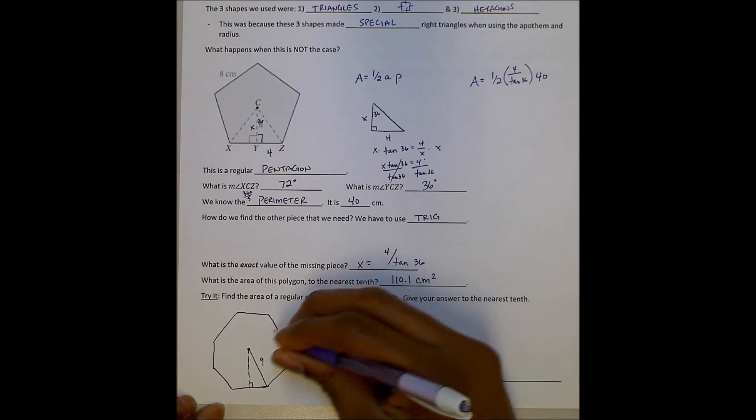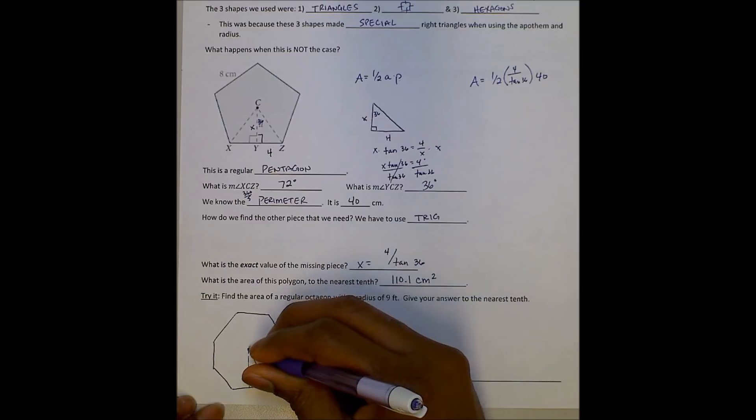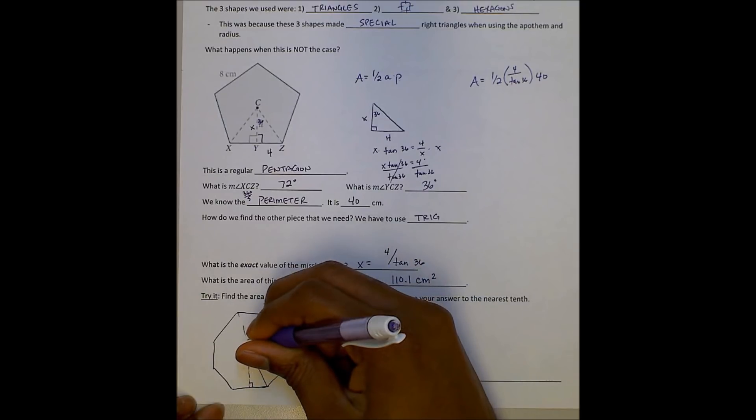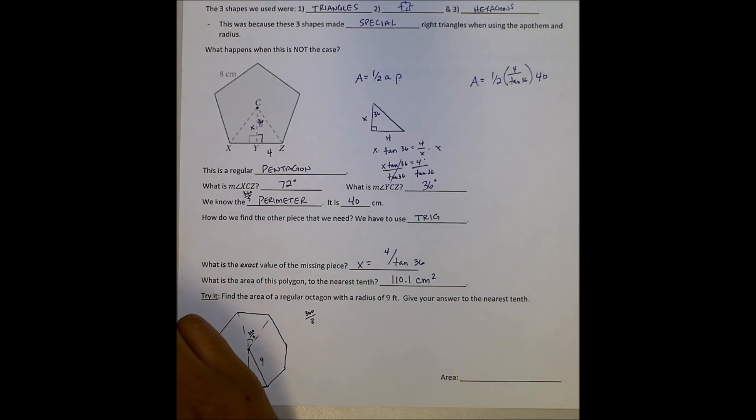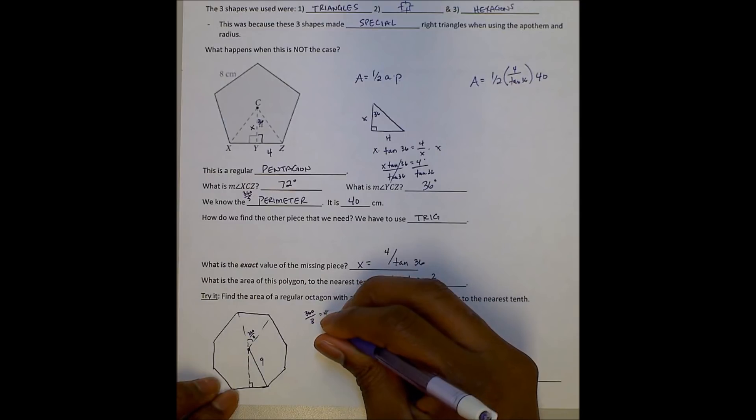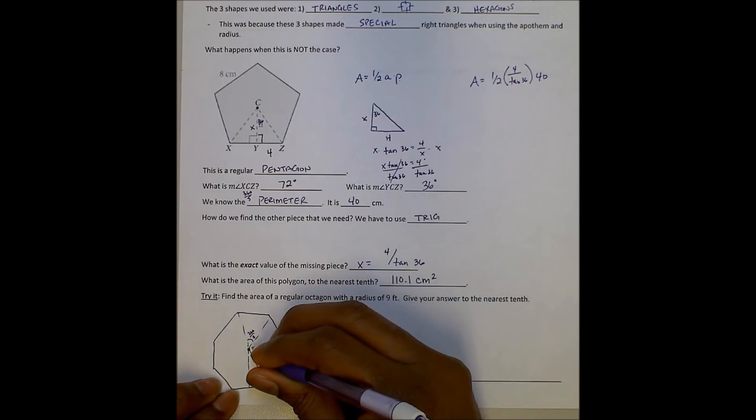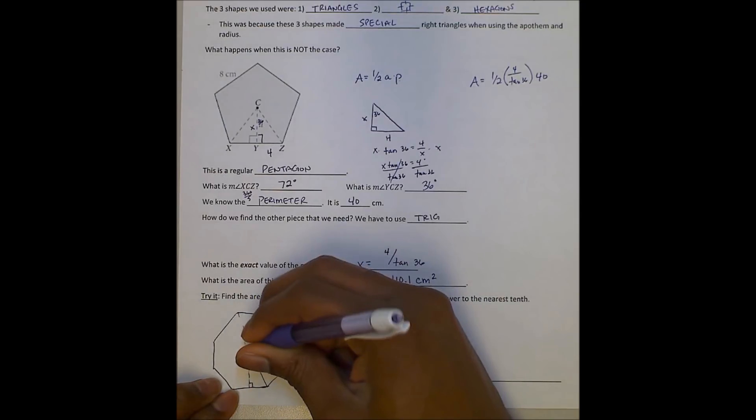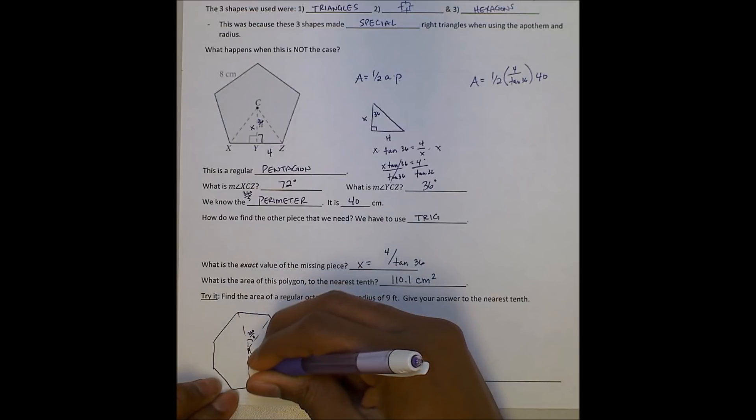I need to find this angle. We can find that angle, remember, because we have 360 divided by 8. That will give us the central angle. This will be 360 divided by 8. And that should just be 45. All right. And so that whole angle, that whole angle is 45. The apothem breaks it down and makes it half of that, which will be 22.5.